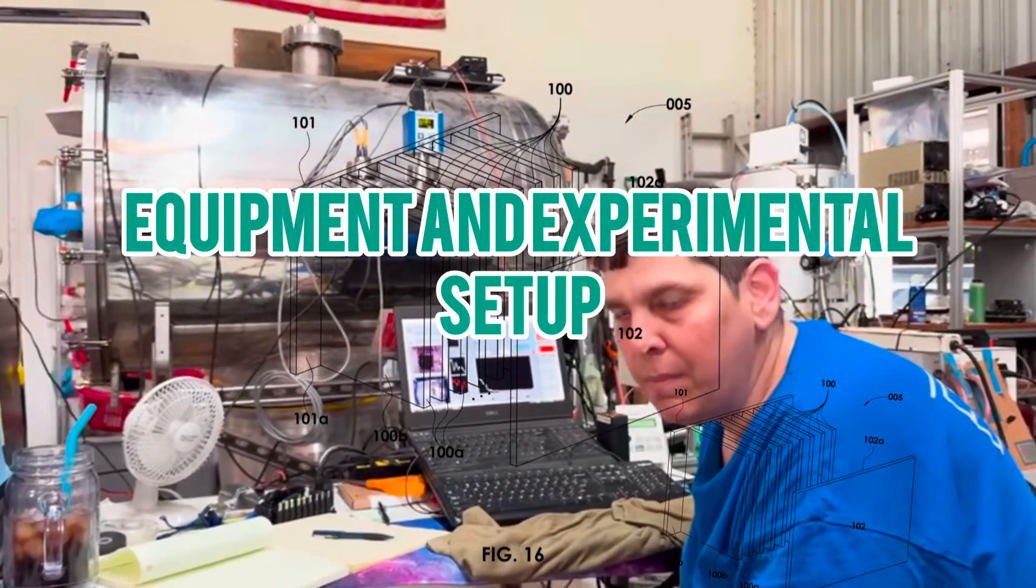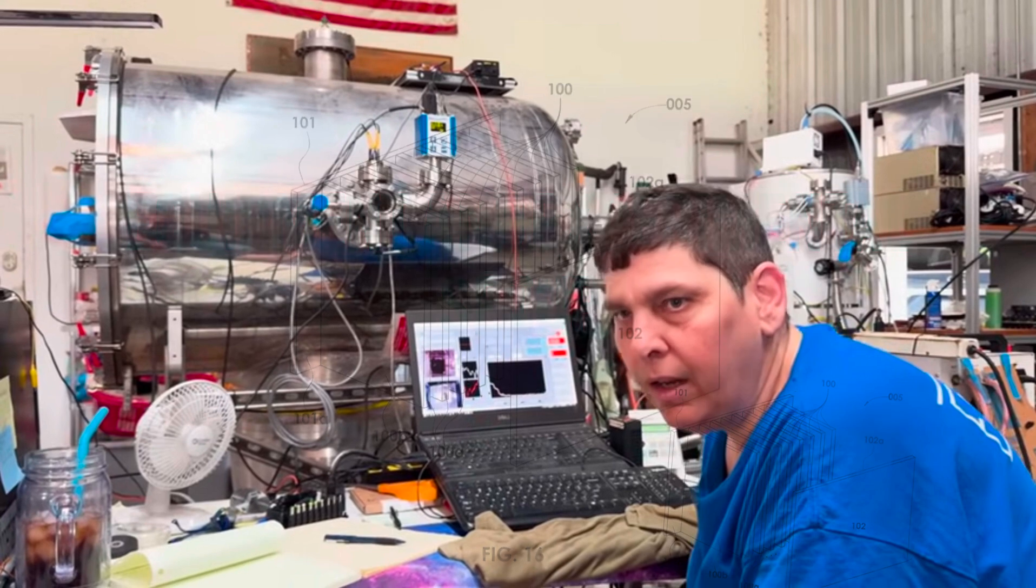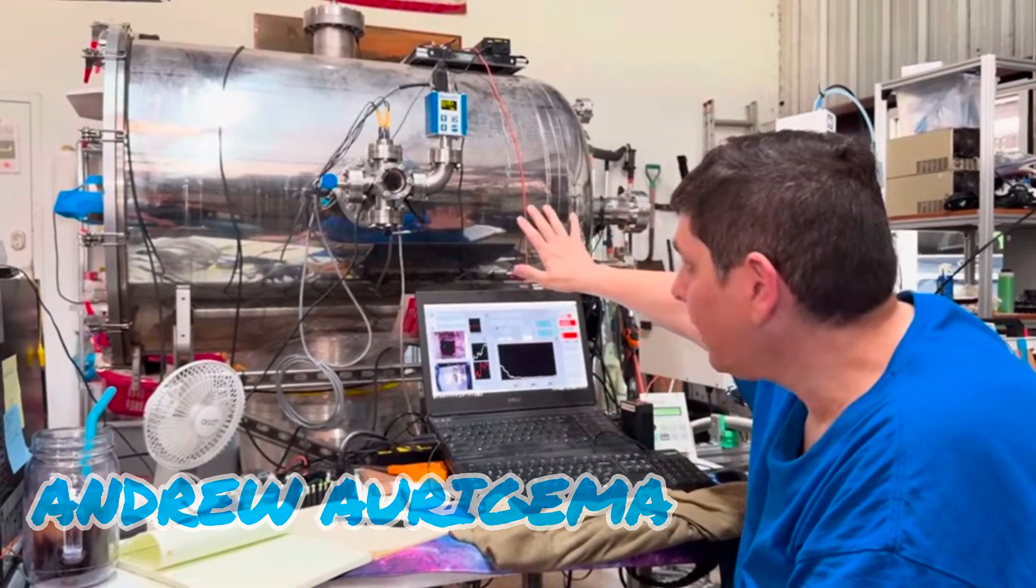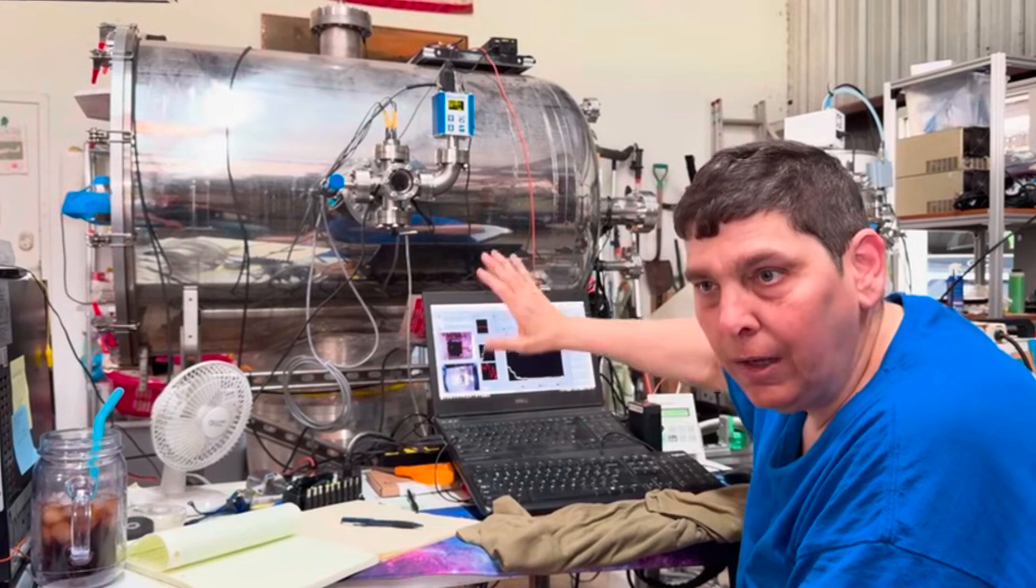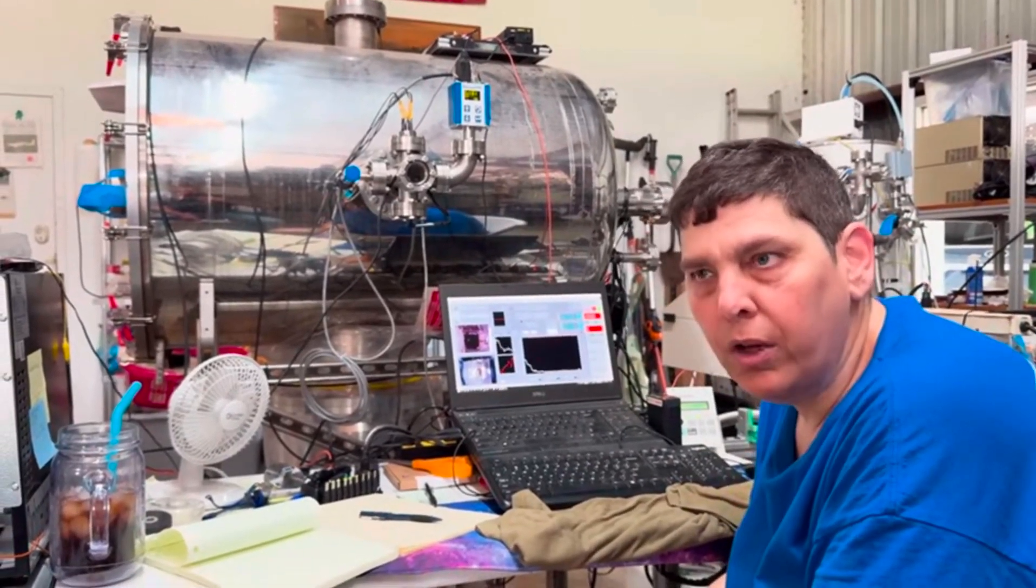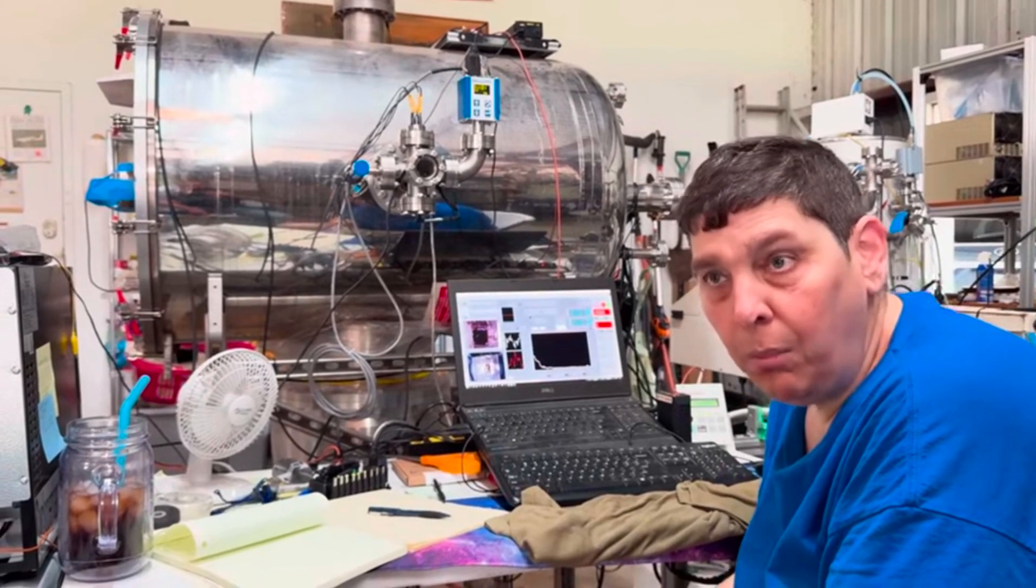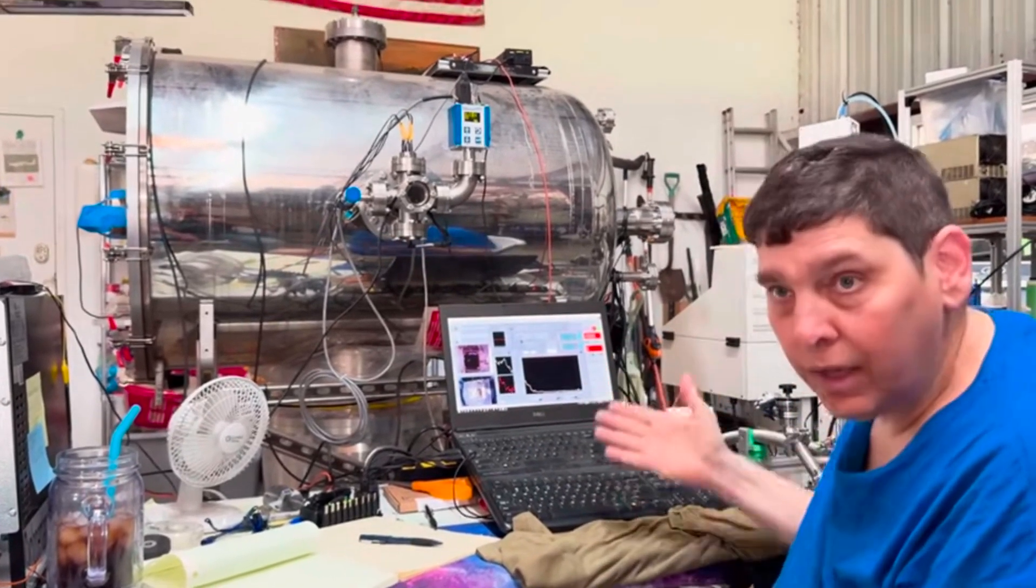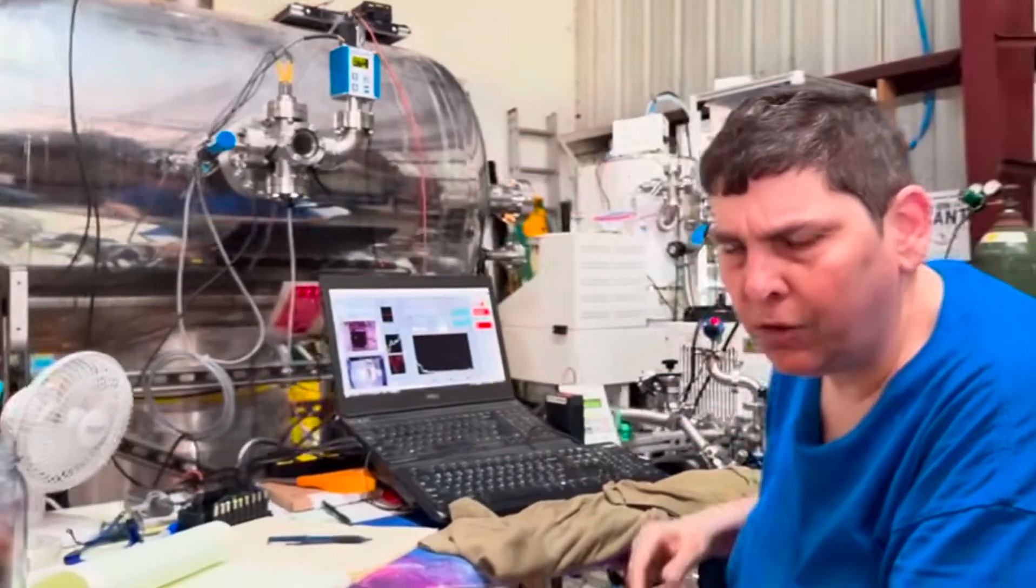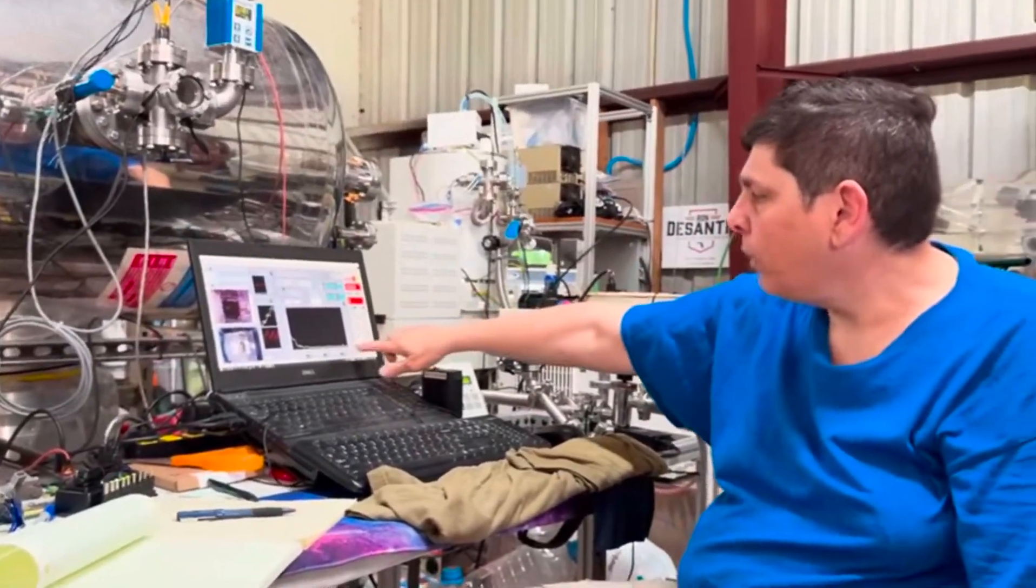Equipment and experimental setup: The experimental setups for testing these propulsion systems are highly sophisticated. They include vacuum chambers to simulate the conditions of space, precise force measurement instruments, and various configurations to isolate the source of the thrust. For example, Bula's team built a custom vacuum chamber that could isolate and identify any extraneous sources of force, ensuring that their measurements were accurate.